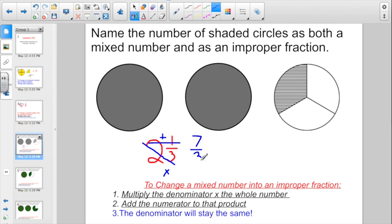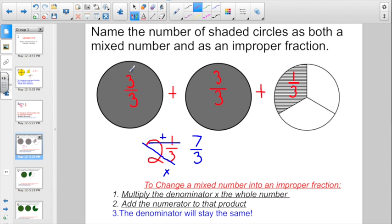And the denominator is the same. 7 thirds. And if you think about it logically, one whole, if you're talking about thirds, you could call that 3 thirds. So 3 thirds plus another 3 thirds would be 6 thirds, plus that last 1 third would be 7 thirds. Multiply, then add. The denominator stays the same.